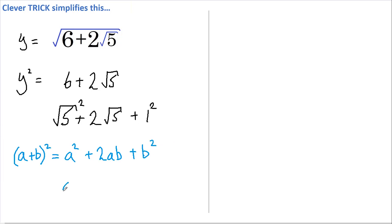And if we set a equal to root 5 and we set b equal to 1, then plugging these values into this equation gives us this. And that means we can rewrite this in this form where a equals root 5 and b equals 1.